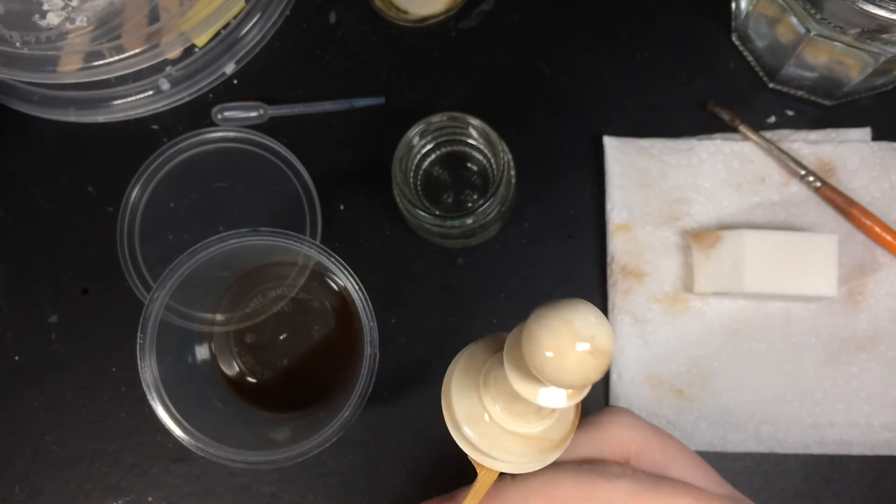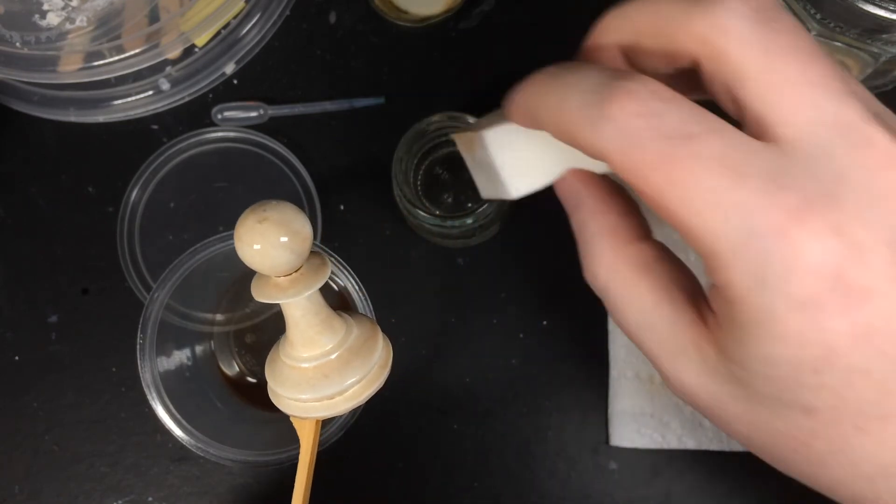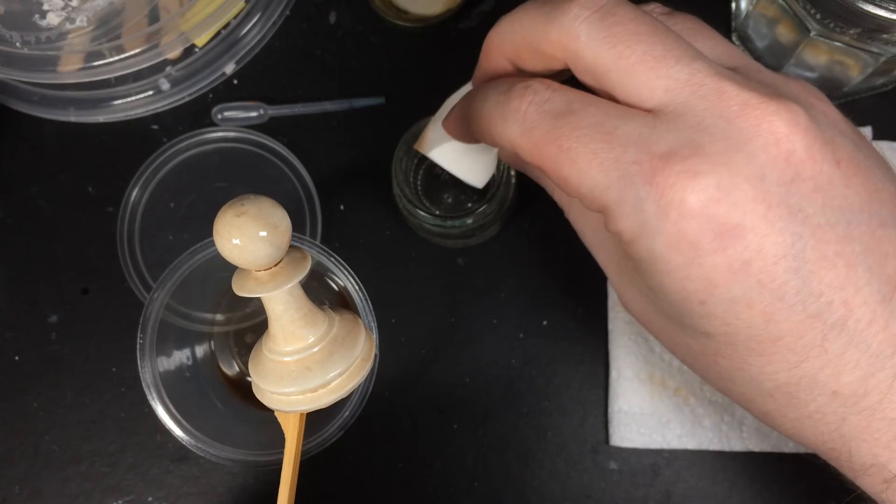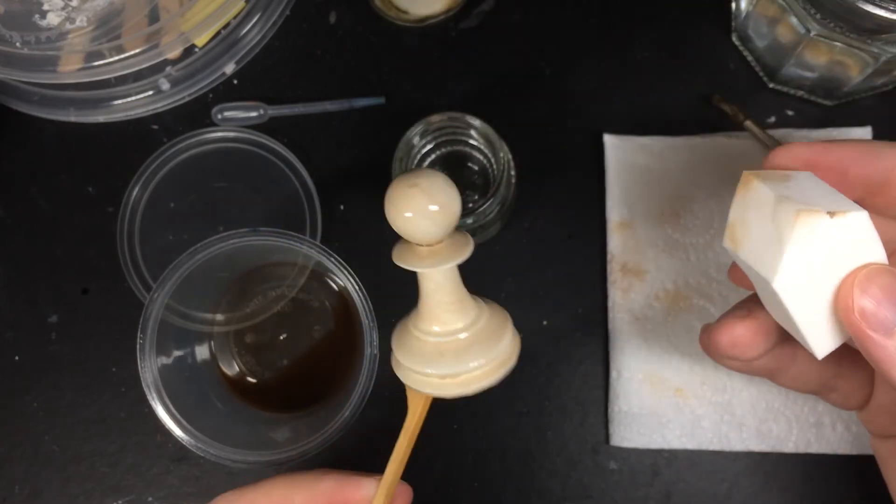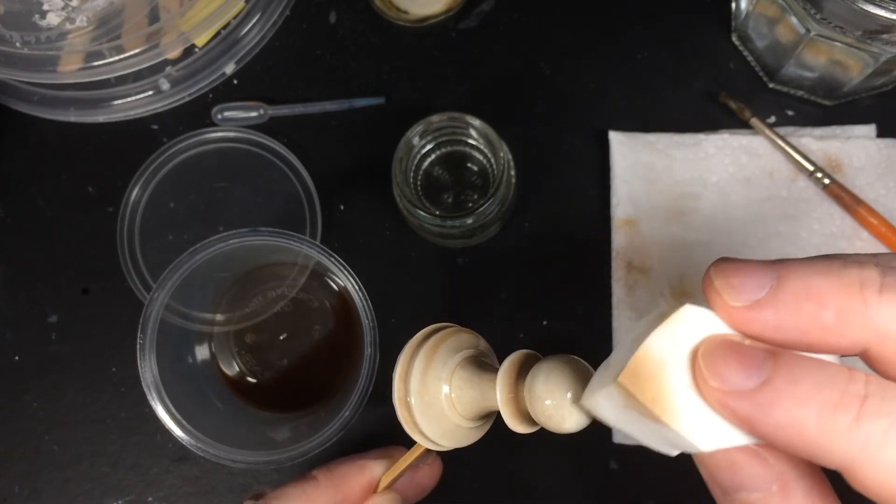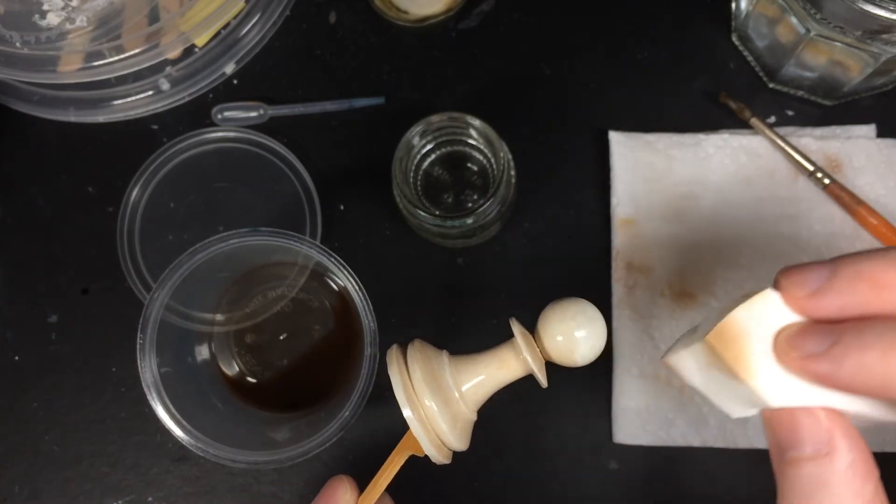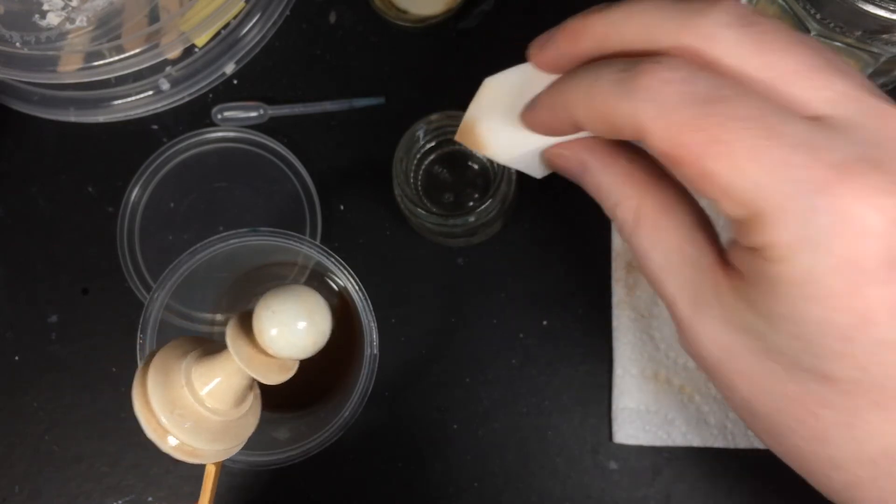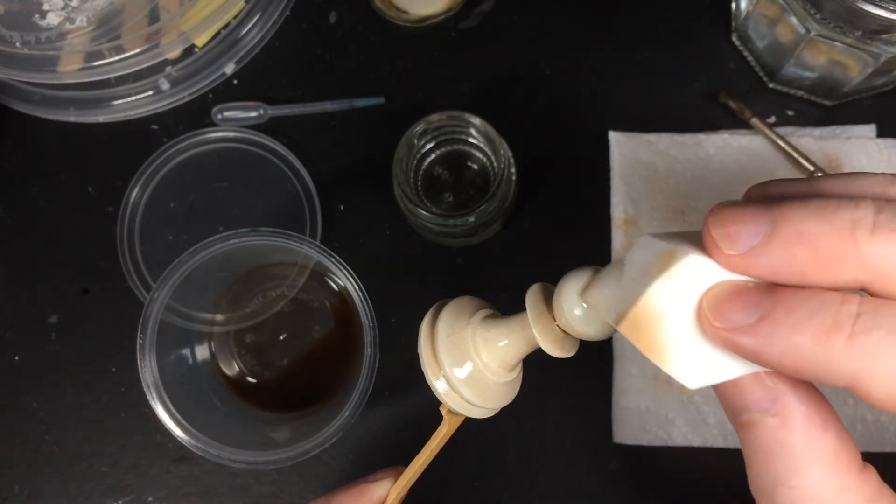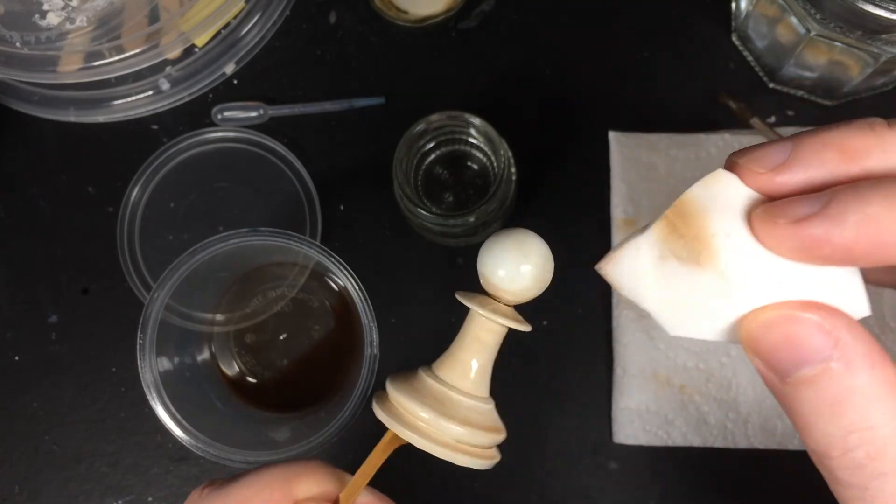Now after you've coated the entire piece, take a soft sponge and remove some of the wash from the raised areas. I'm dipping the sponge in some solvent here so that it removes a little bit more of the paint. Adding solvent to the sponge softens the edge and blurs it a little bit so you don't get a hard transition between the white areas and the stained areas.